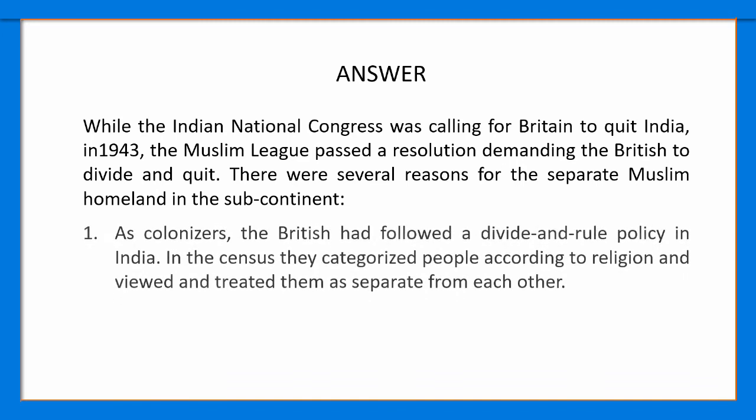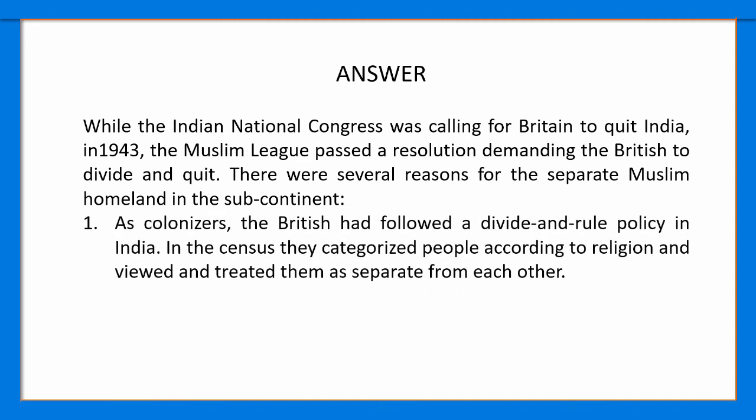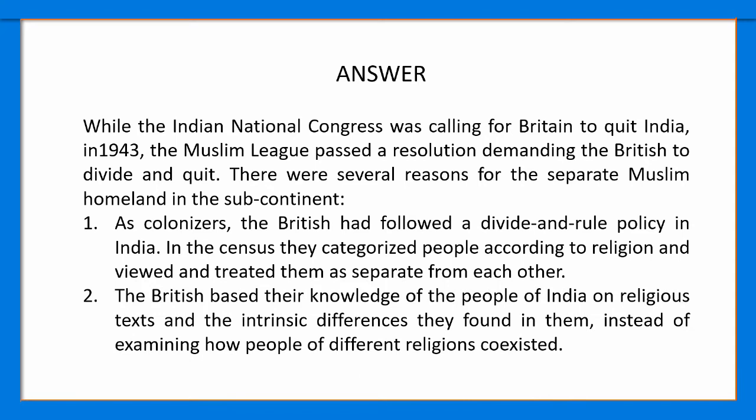Point one: as colonizers, the British followed a divide and rule policy in India. In the census, they categorized people according to religion and viewed and treated them as separate from each other. Point two: the British based their knowledge of the people of India on religious texts and the intrinsic differences they found in them, instead of examining how people of different religions coexisted.